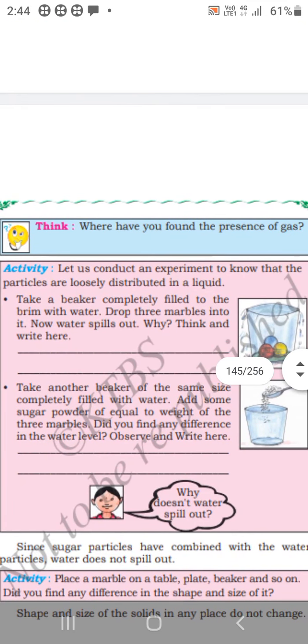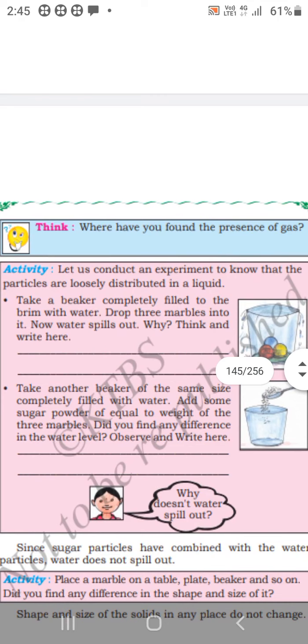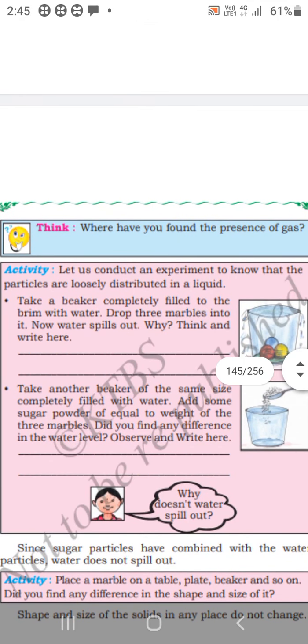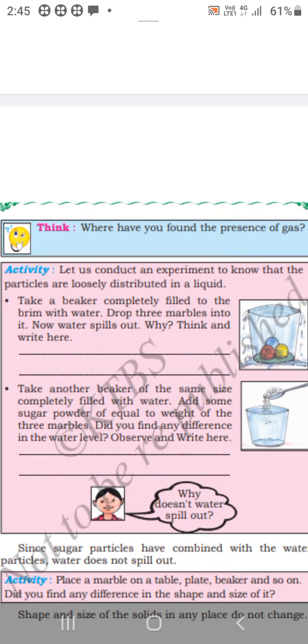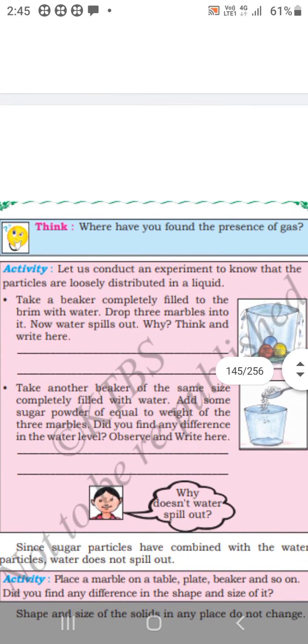Take a beaker completely filled to the brim with water. Drop three marbles. Now water spills out. Why? Think and write here. The water spills out because the space of the water was occupied by the marbles.